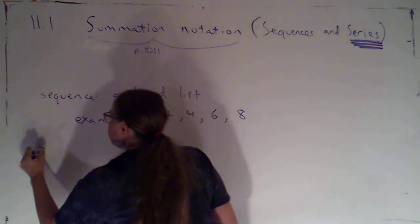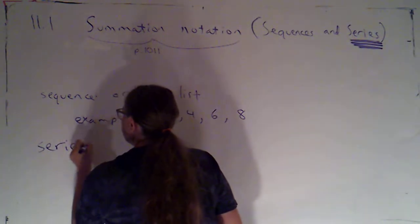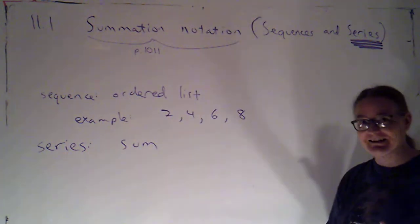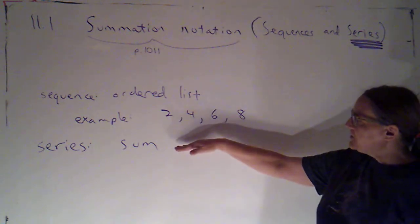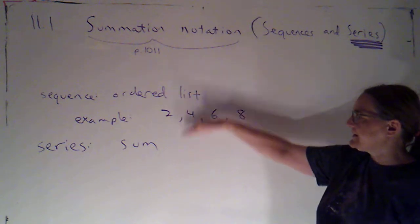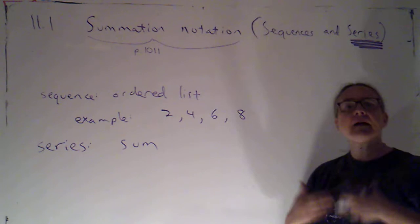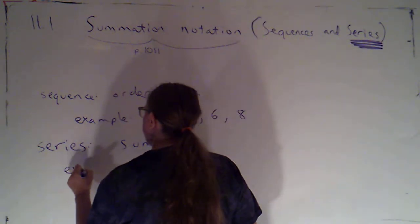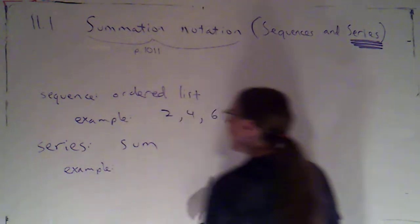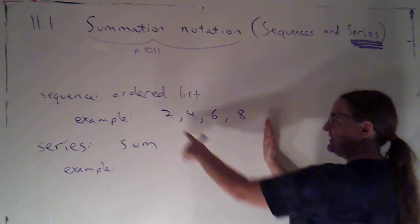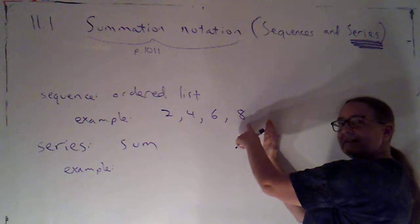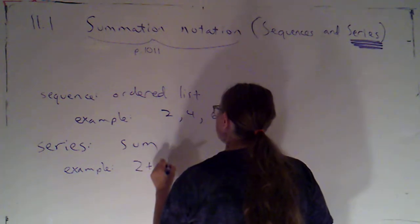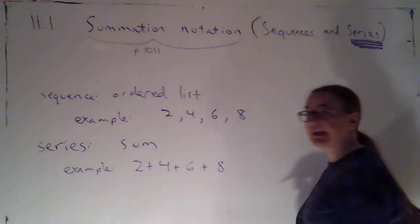Now, a series is a sum. Series is just a fancy way of saying it's a sum of things. The connection between a series and a sequence is that I'm going to be adding up a list of things. So, I could have as my example for a series, I could add up the items on this list, or the elements of this sequence. So I could have 2 plus 4 plus 6 plus 8.